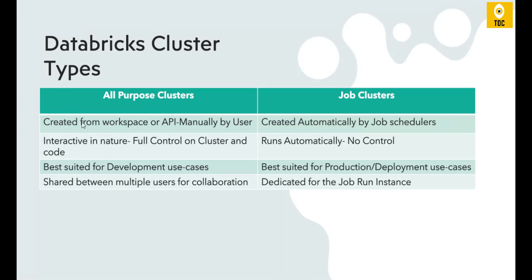The Job Cluster, on the other hand, is not created by anyone manually. It is automatically created by the job scheduler when you schedule a Databricks job and tag it to a Job Cluster. The cluster is created on the fly, executes that job, and then automatically terminates. It cannot be shared across multiple people or multiple jobs — it is dedicated solely to that specific job run instance.